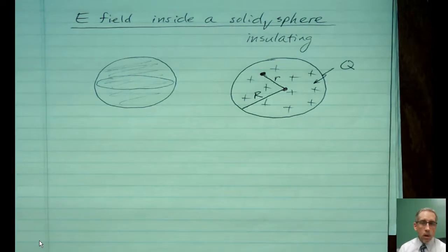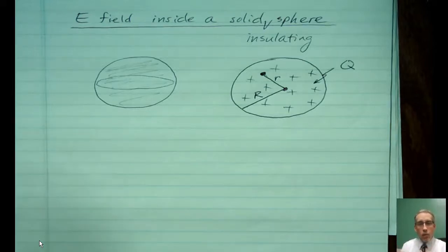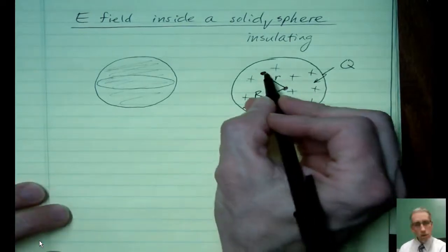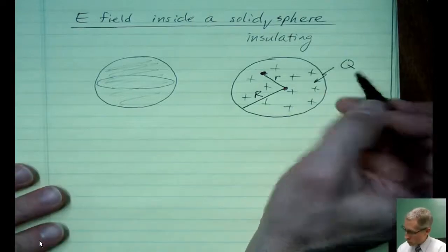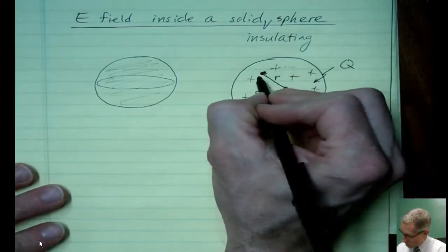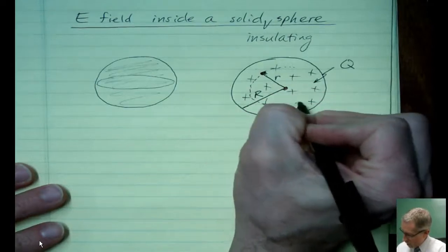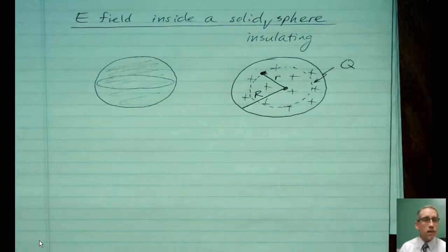And so when we do Gauss's Law, the first thing we always do is we draw a Gaussian shape that matches the symmetry of our charge and of our electric field. So spheres create this radiating inward or outward kind of a field. And that is what we call spherical symmetry. So that means we want to draw a sphere for our Gaussian shape. And that Gaussian shape should go right through the point that we are using to describe the electric field. So that would be this location here I drew with a dot. So I'm going to draw a cross-section of the sphere.